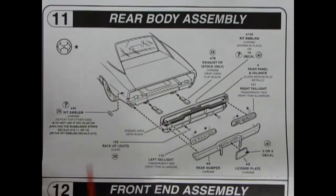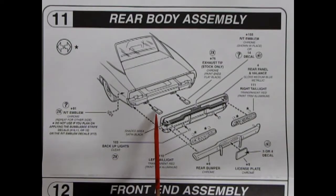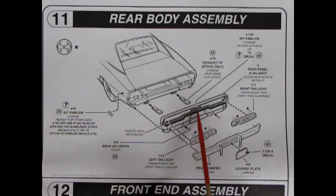Panel eleven shows our rear body assembly and this is where you put your exhaust tips onto the back of those exhaust pipes. The entire back end pops in. This of course is painted flat black or gloss black in there. Tail lights popping into there, little backup lights, the rear bumper and the license plate.